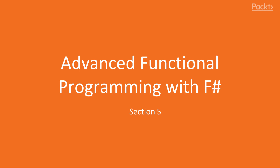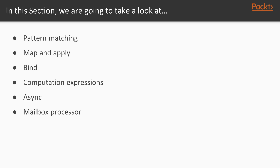In this section, we will look at more advanced functional programming concepts with F#. Let's review what we will learn. First, we will look at a very powerful concept in functional programming: pattern matching. Then, we will learn how to combine our functions using map and apply, and further using the bind concept. We will look at computation expressions, also known as monads, and async blocks. Finally, we will see how to do multi-thread programming using the mailbox processor.